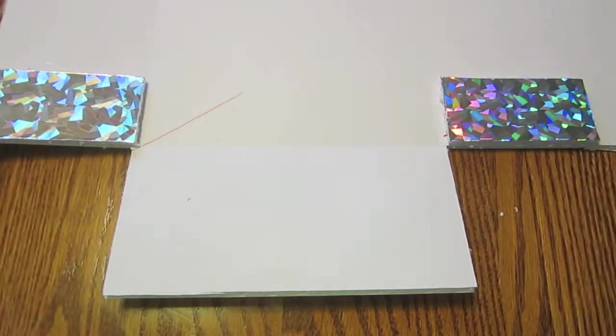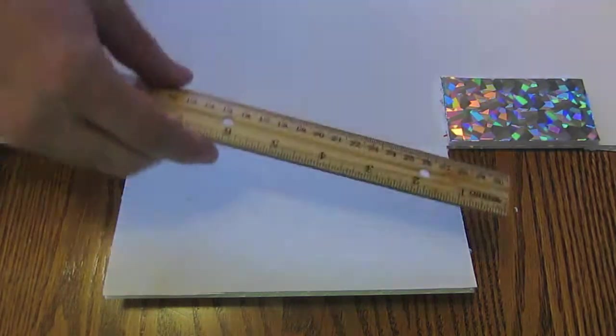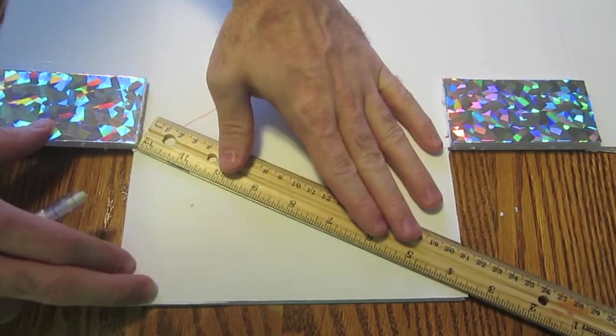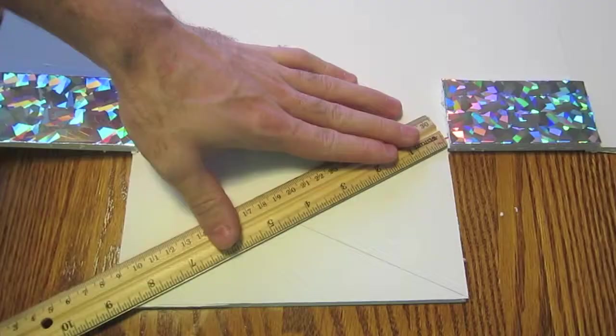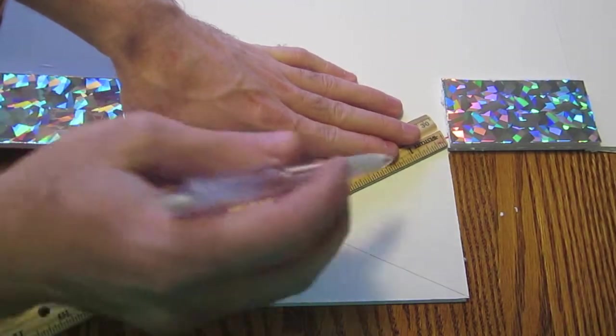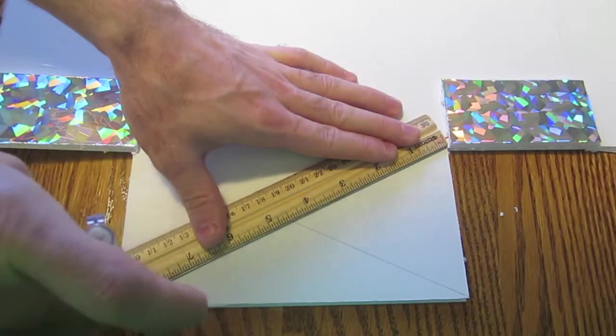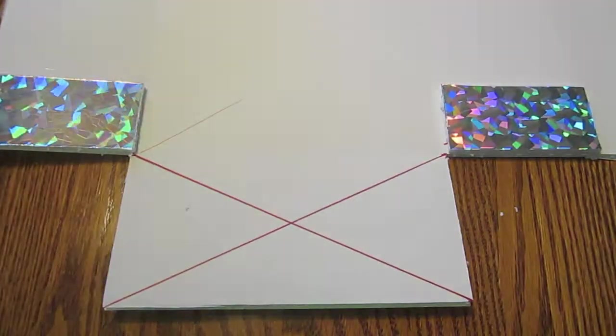I'm going to need to find the center point of here. And one of the easiest ways to do that, just take a ruler, a sharp pencil, and go from one corner to the other corner. The same thing with the other corner to corner. So there's the center point.